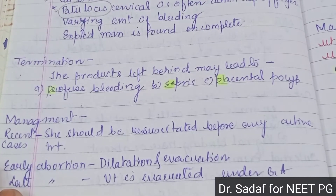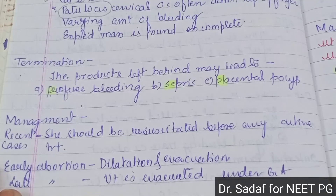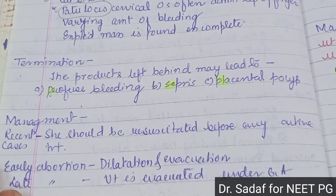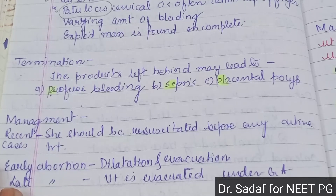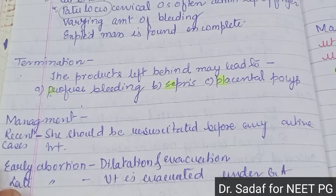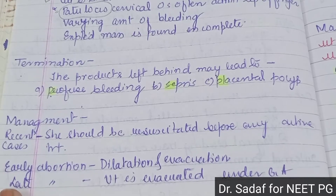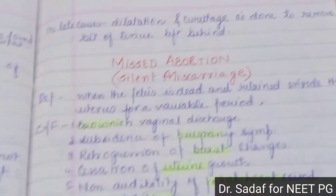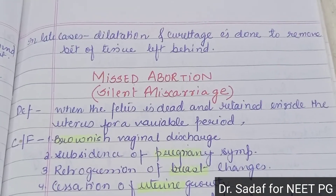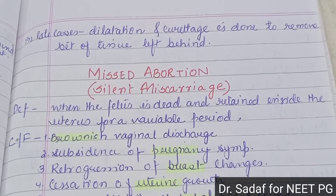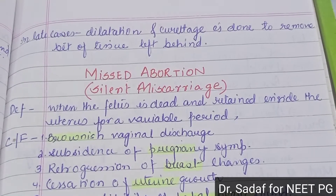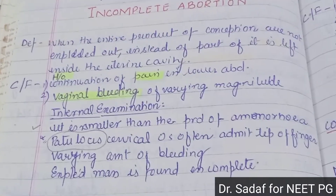Now you need to manage incomplete abortion. If someone presents with incomplete abortion in severe recent cases, she should be resuscitated before any active treatment. If there is early abortion, dilatation and evacuation is performed. If there is late abortion, the uterus is evacuated under general anesthesia. In late abortion, dilatation and curettage is done to remove the tissue left behind.